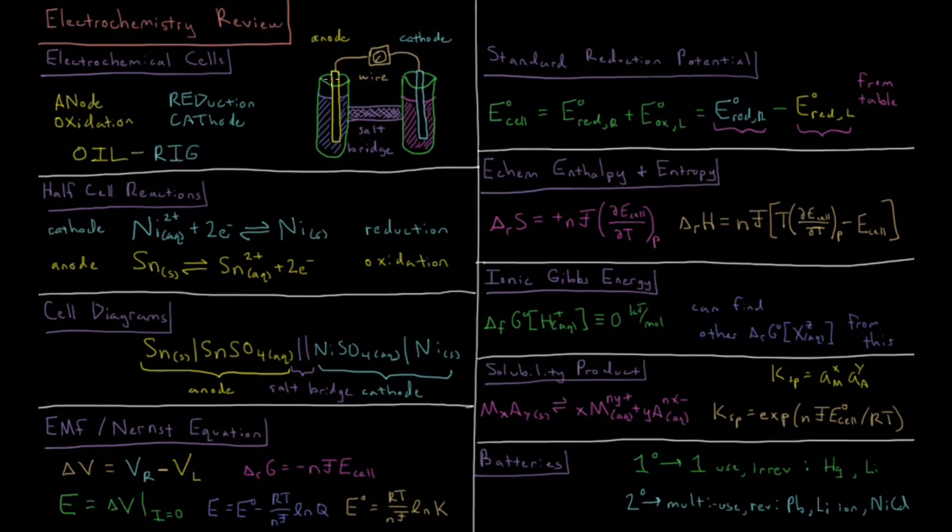At the anode here, an oxidation occurs where some metal in this anode is oxidized into solution and loses electrons. Those electrons flow through this wire to the cathode, and then those electrons reduce some metal in the solution and deposit it on the cathode.